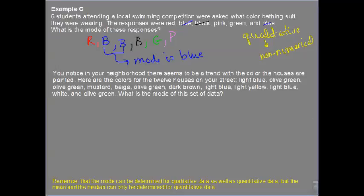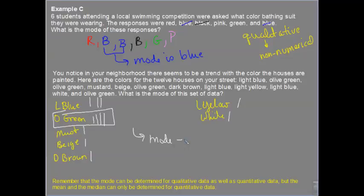So, we can find the mode here on these houses. Will you guys tell me what the mode is for the houses? I have light blue, I have olive green, I have mustard, beige, dark brown, light yellow, light blue, white. So, we can do a tally on this. I have a light blue house, I have an olive green house, I have another olive green house, I have a mustard house, I have a beige house, I have another olive green house, I have a dark brown house, I have a light blue house, a light yellow, a light blue, a white, and an olive green. The mode is olive green.